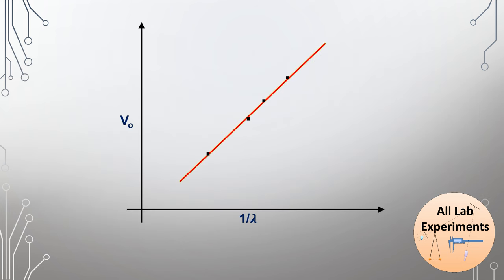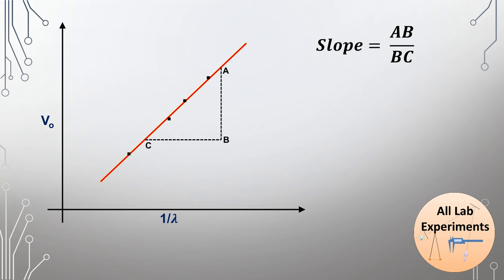Now we plot 1/λ versus the knee voltage, and we find this makes a straight line. To find its slope, we draw two perpendicular lines AB and BC. The slope of this line is AB/BC.